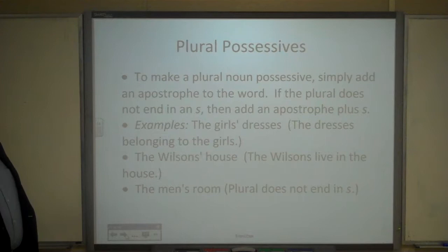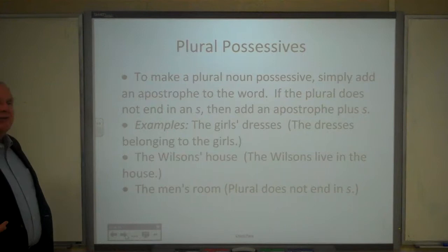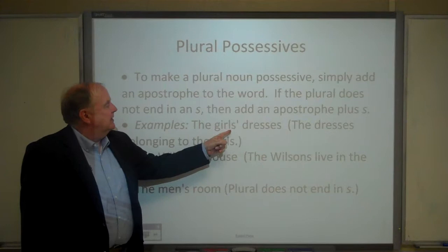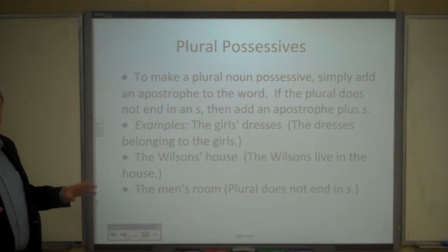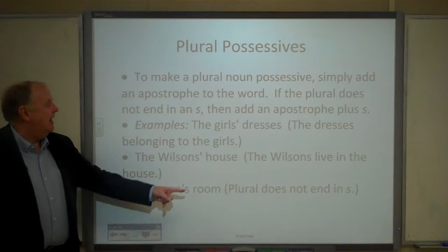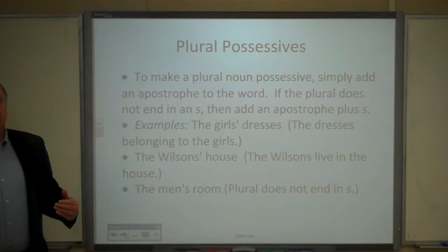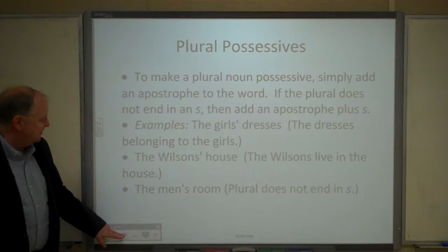To make a plural noun possessive, you simply add an apostrophe to the word. If the plural does not end in S, then you add an apostrophe S. So 'the girls' dresses' — the dresses belonging to the girls, S apostrophe. 'The Wilsons' house' — the house where the Wilsons live, apostrophe after the S. But 'the men's room' — men is plural but doesn't end with S, so you add apostrophe S to show the pronunciation.